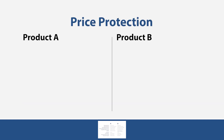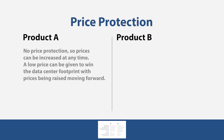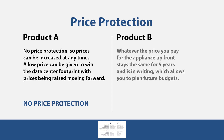Price protection: Product A offers no price protection, so prices can be increased at any time — a low price can be given to win the data center footprint with prices raised moving forward, meaning there is no price protection. Product B guarantees that whatever price you pay for the appliance upfront stays the same for five years and is in writing, allowing you to plan future budgets — you receive price protection.